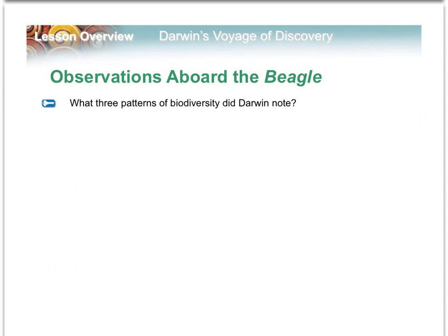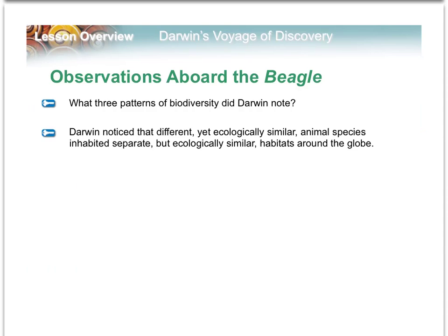While Darwin was on this voyage noticing these peculiar things, he started to notice some patterns — some patterns in the biodiversity. There are three of them we're going to go over. The first thing Darwin noticed was that different, yet ecologically similar animal species inhabited separate but ecologically similar habitats around the globe. In short, this means that he noticed species very globally.